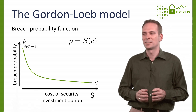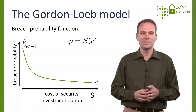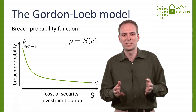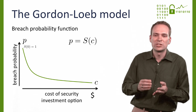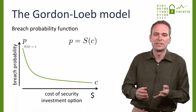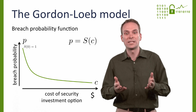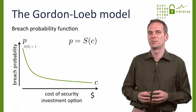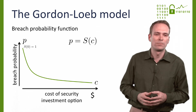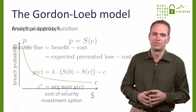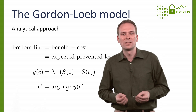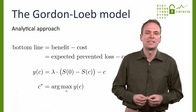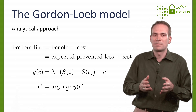This leads to a shape as illustrated here. Decreasing marginal benefits can be justified by the observation that security managers would implement cheap controls first, leaving the more expensive ones for later. Or by the fact that with more controls installed, more coordination and interoperability issues arise. With all these assumptions and formal machinery, we can solve the model for the bottom line — that is, benefit minus cost — and find the value C* that maximizes the bottom line.